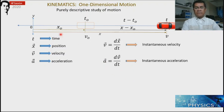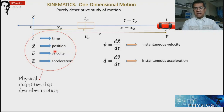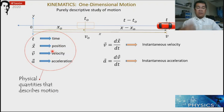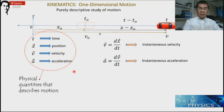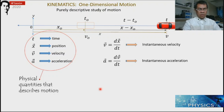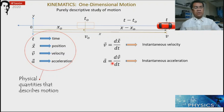So therefore, these are the quantities that describe the motion of a particle: time, position, velocity, and acceleration. Another way to describe motion is to use a graph — we can describe the motion by looking at a graph.